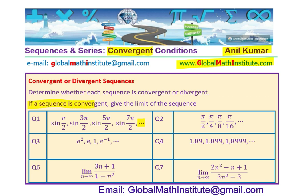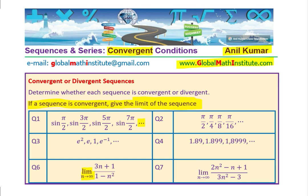If the sequence is convergent, give the limit of the sequence. Basically, we have an infinite sequence — there are infinite terms. We are trying to figure out what the last term could be. You can never reach infinity, but you can approach that value. The word 'limit' exactly captures that idea. We have two examples with limits and will see how to answer these questions.